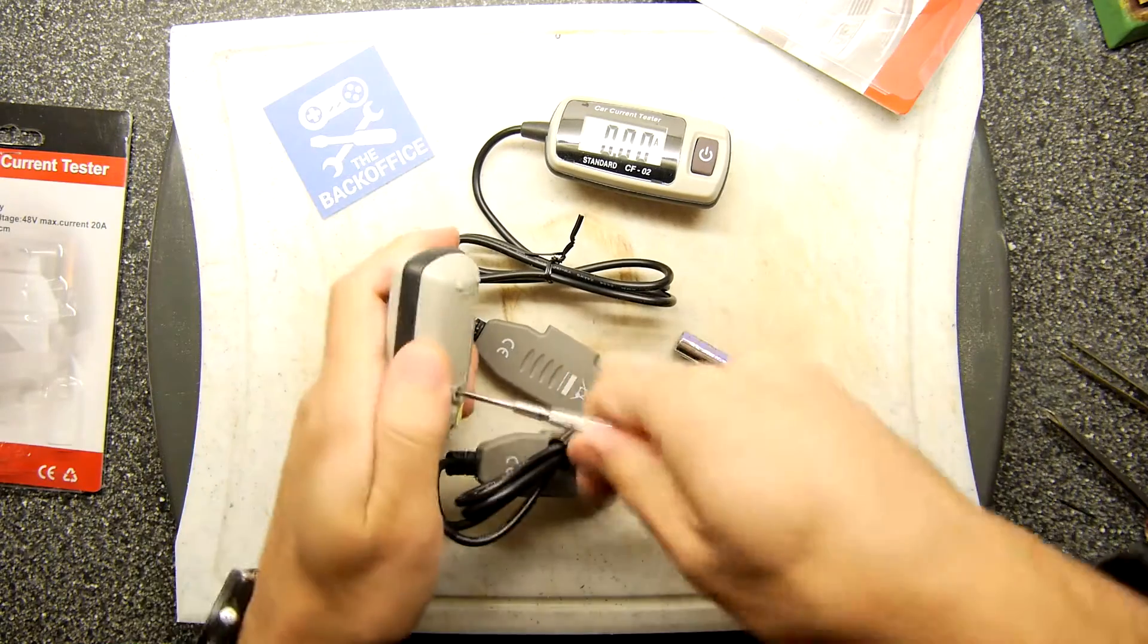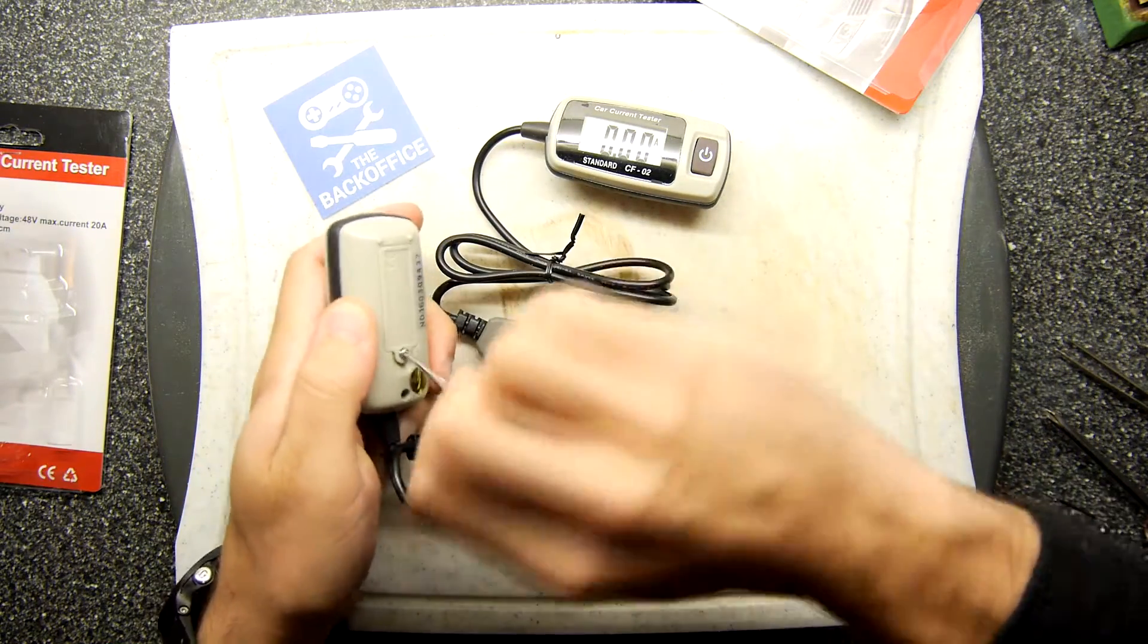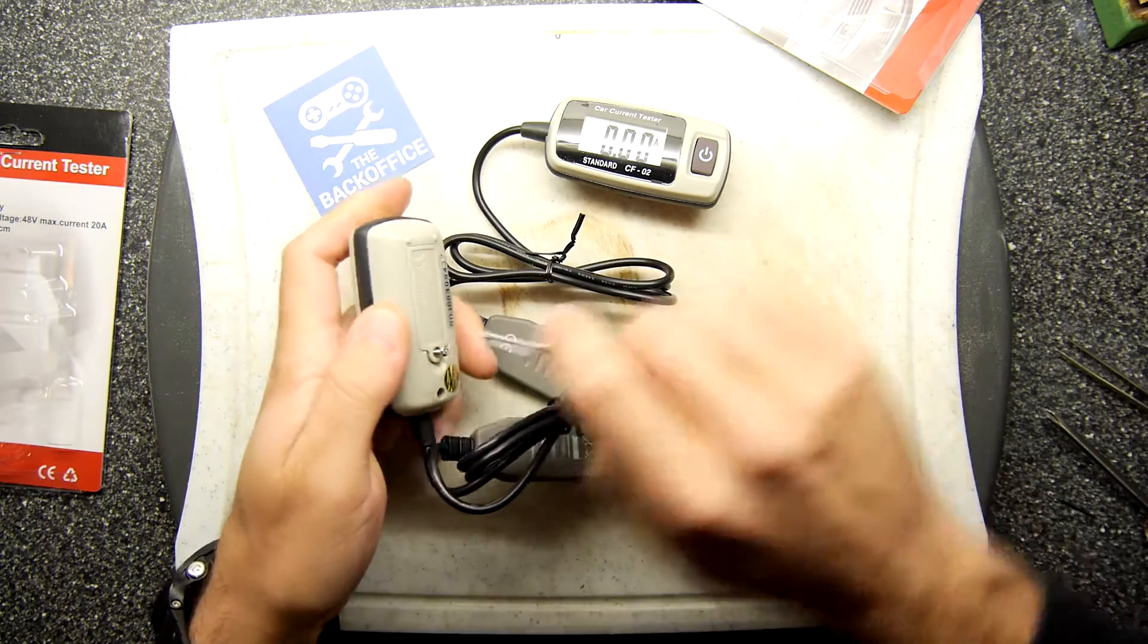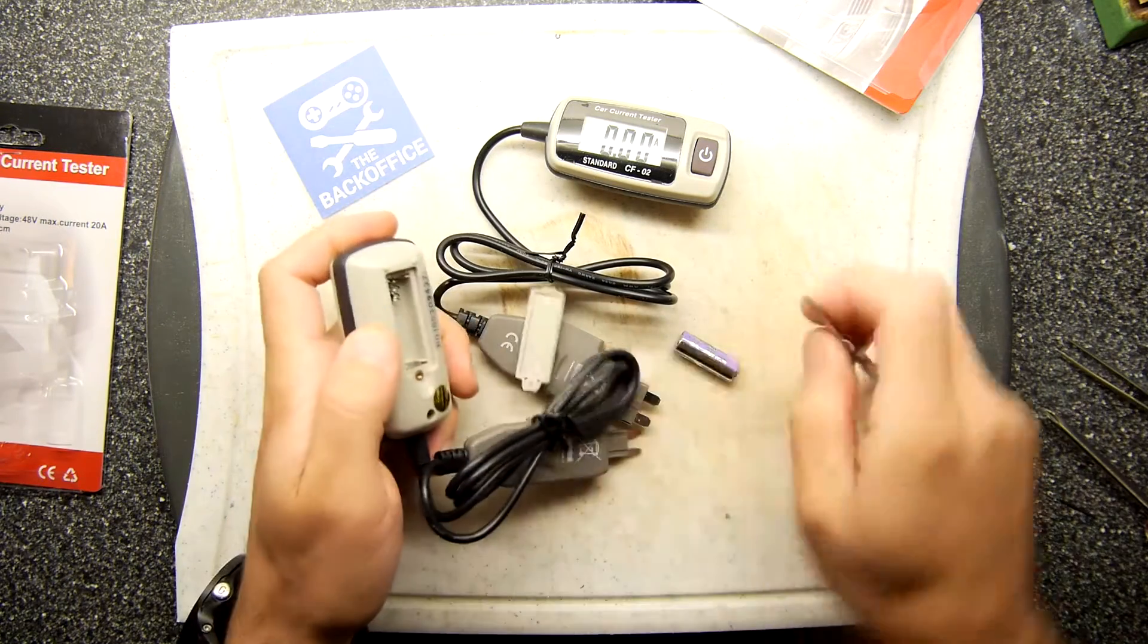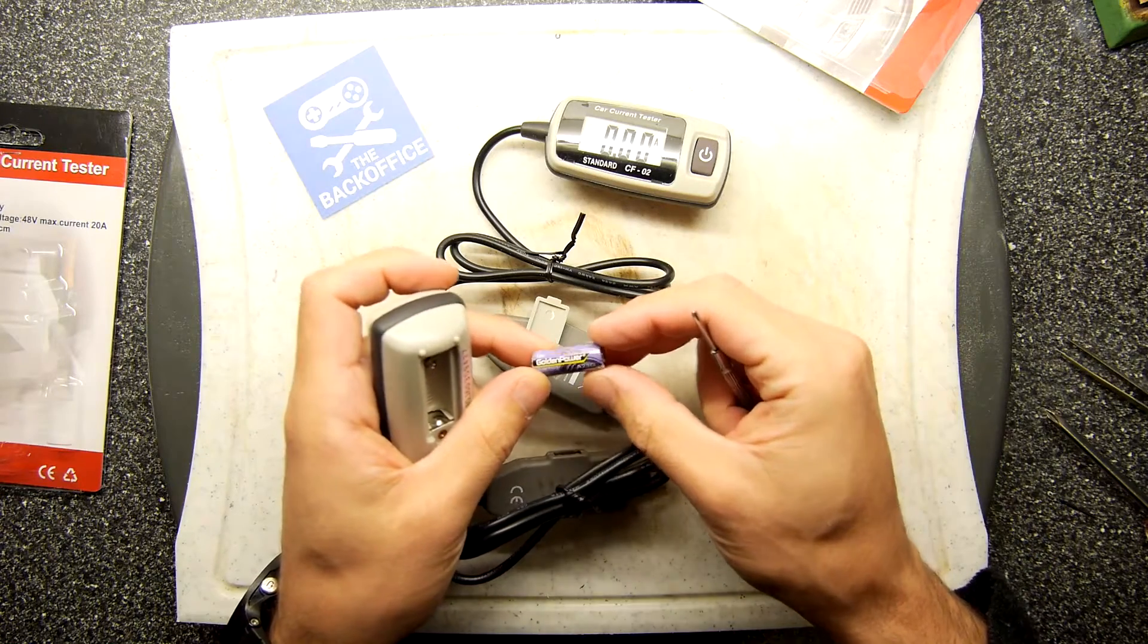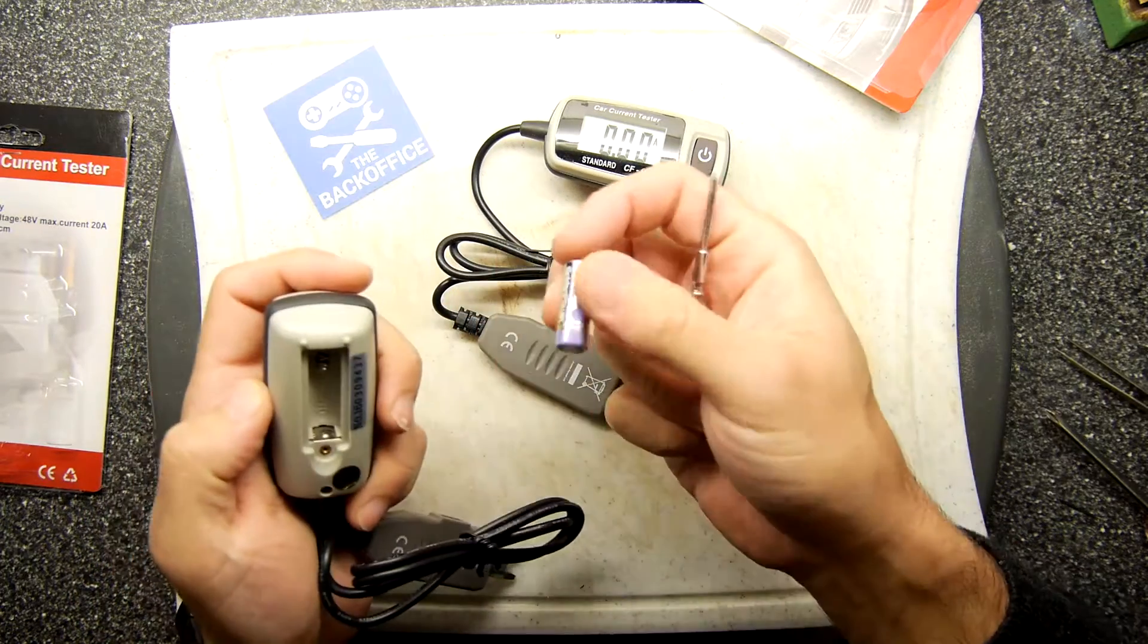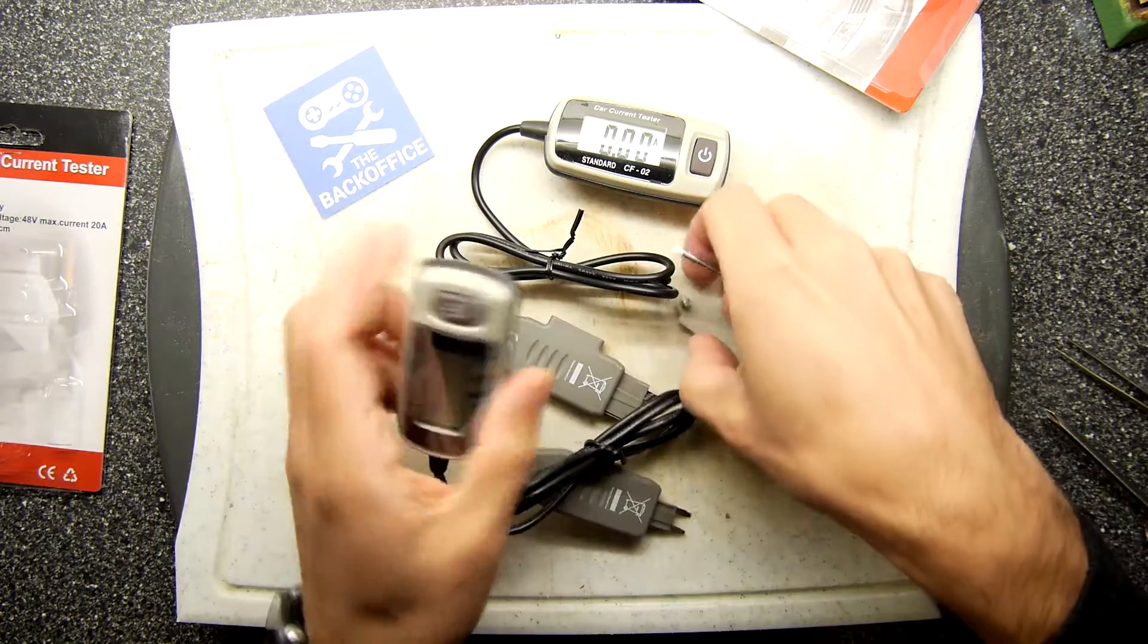So it simply screws off at the back which is quite a bit stiff on this one but easy on the other one, and it comes with that handy little battery which I think is a 12 volt. Golden Power 12 volt battery A23G. You've probably got some of these. These used to be popular in car alarm key fobs.